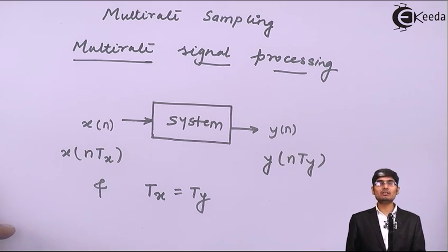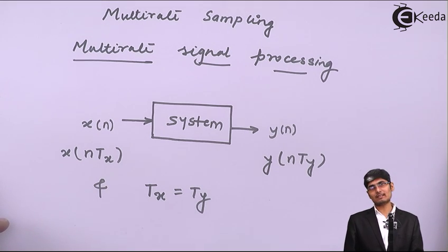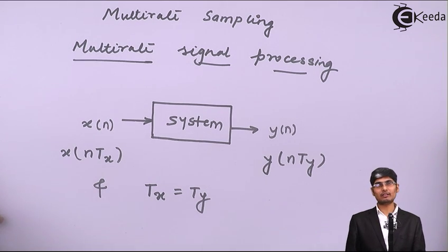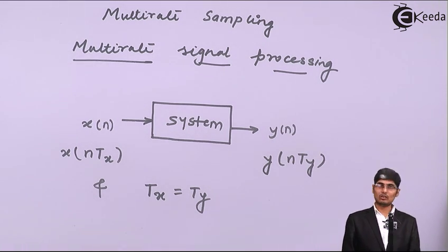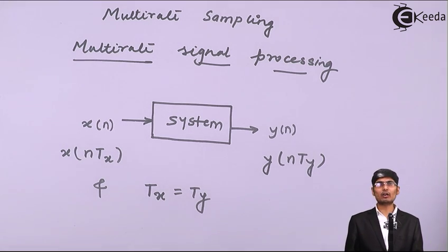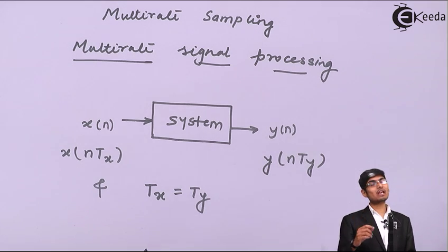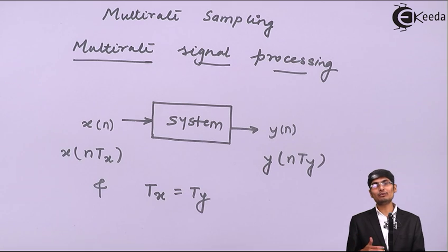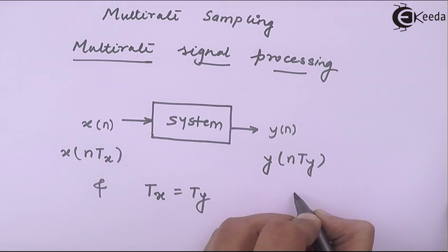But in many telecommunication applications it is sometimes needed that we have to change the sampling rate. For example, if I am simultaneously transmitting many signals together through a channel — the system is my channel — through this channel I am transmitting an audio signal, a speech signal, telephony signals, music sampled at 44.1 kilohertz, and a video signal. All these discrete signals will have different sets of sampling rates.